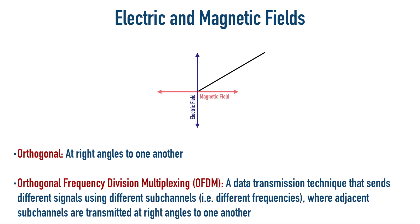I know that might sound like a complicated term, but it really means that we are separating different channels into different frequencies — frequency division multiplexing — and to make sure the channels don't interfere with one another, we're angling each subsequent transmission at a 90-degree separation from the previous transmission, just like the lenses we demonstrated. We can send one transmission vertically using the electric field, and then the next sub-channel can be sent horizontally using the magnetic field.